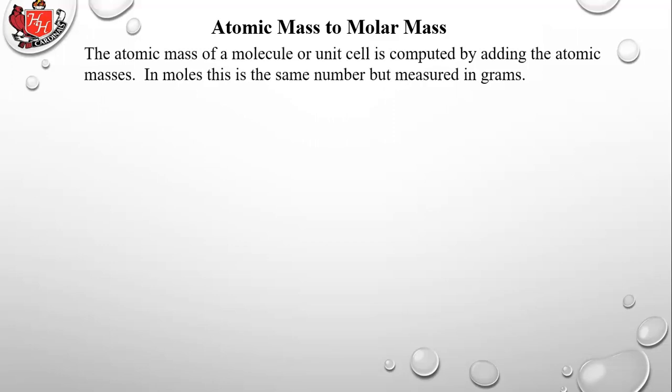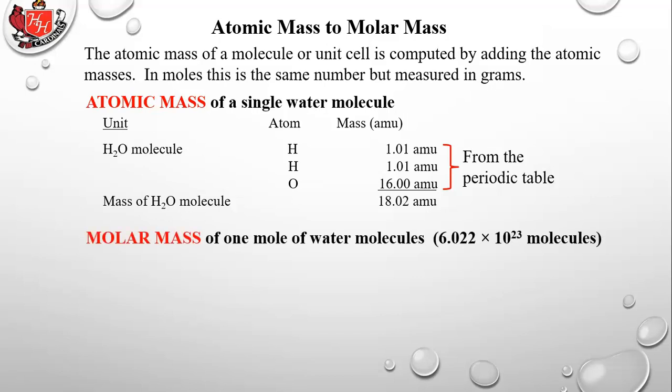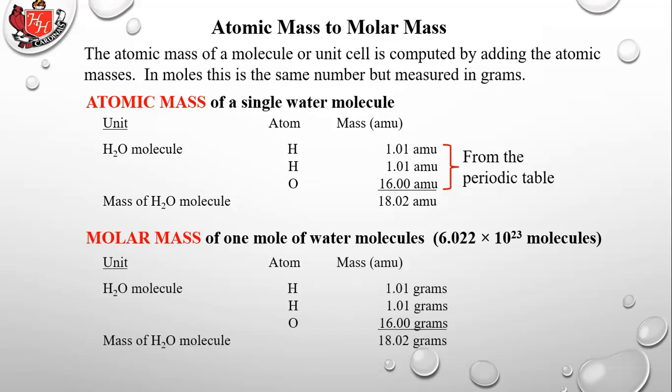Now let's talk about converting atomic mass to molar mass — a very simple process. For H₂O, take two hydrogens at 1.01 amu each and one oxygen at 16.0 amu, add them up, and the mass of a water molecule is 18.02 amu. For the molar mass — one mole (6.022 × 10²³) of water molecules — everything looks exactly the same: you use the atomic masses from the periodic table, but instead of amu you call it grams. So one mole of water has a molar mass of 18.02 grams.